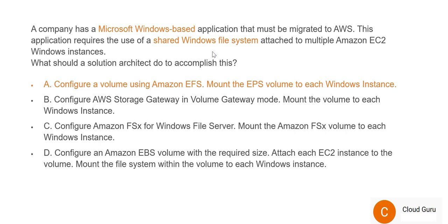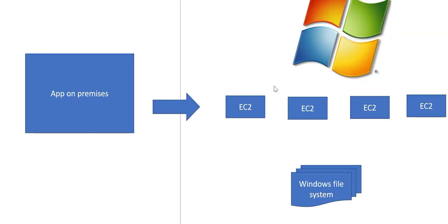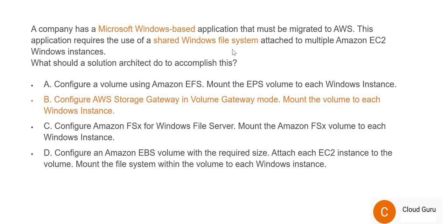Now let's evaluate the options. EFS works with Linux, not Windows, so cancel it — it's wrong. Storage Gateway is used for hybrid cloud scenarios where you have components both on-premises and in AWS. This question is about a full migration, not hybrid, so Storage Gateway is of no use here — option B is wrong.